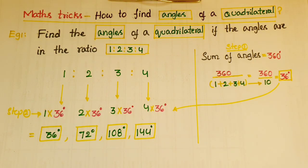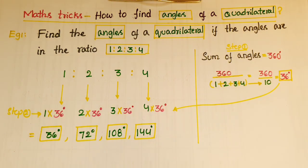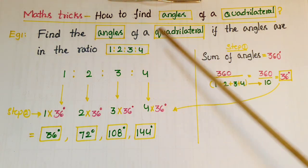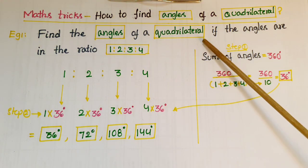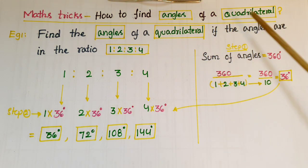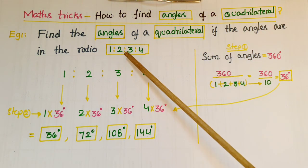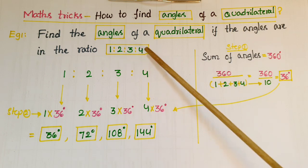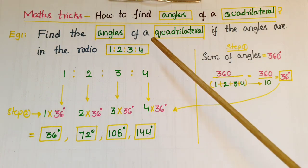Hello everyone, today I am going to show some methods to find angles of a quadrilateral. A quadrilateral is a closed polygon with four line segments. The first problem is: find the angles of a quadrilateral if the angles are in the ratio 1:2:3:4.